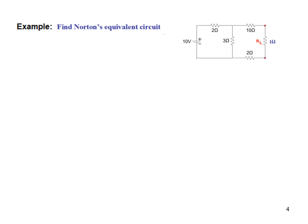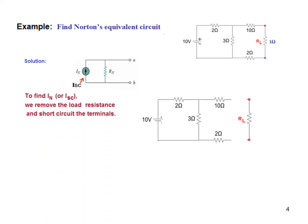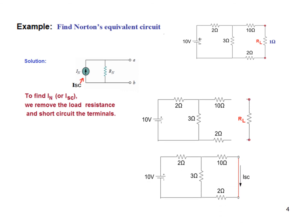Now let's solve an example. We have to find Norton's equivalent circuit — this is the load. For the solution, we need to find I short circuit (I Norton) and also Rn, the resistance of the circuit. To find I short circuit, we remove the load resistance and short circuit the terminal, then find this current and the circuit resistance.